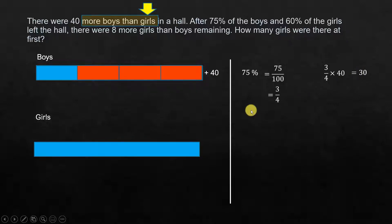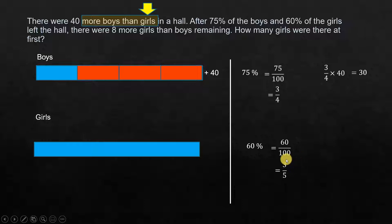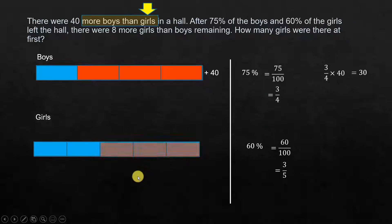The remaining from the known quantity is 10. Now for the girls: it's 60%, which can be represented as 60 over 100, or on simplification, 3 over 5. This means we divide the total girls into 5 parts, out of which 3 parts leave, leaving us with 2 parts.